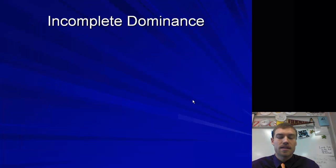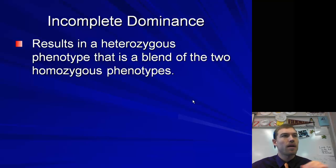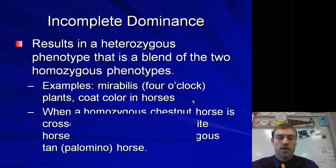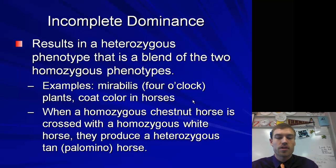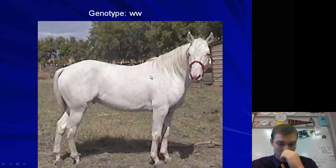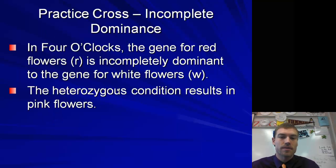Incomplete dominance is kind of similar to codominance but a little bit different. What happens is that the heterozygous phenotype is a blend of the two homozygous phenotypes. It's not going to be like the roan cows where you had red and white spots both showing up, but rather you're going to have a brand new phenotype. An example would be mirabilis or four o'clock plants and coat color in horses. When a homozygous chestnut horse is crossed with a homozygous white horse, they produce a heterozygous tan or palomino horse, which is a new color type.